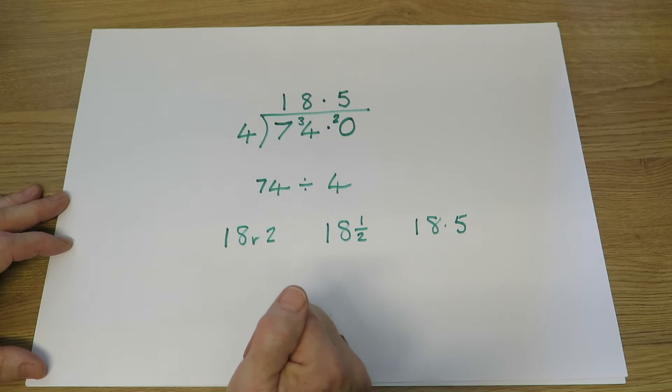Or if we're dealing with bars of chocolate, there's 74 bars of chocolate to share between four people, then they can have 18 and a half bars each.